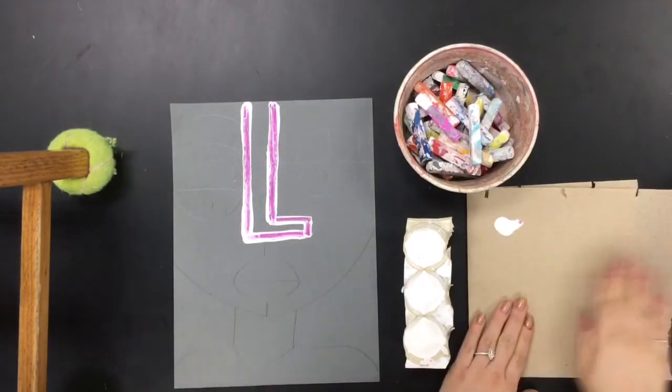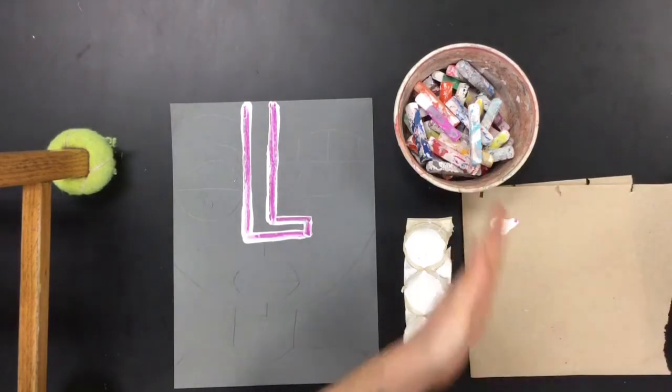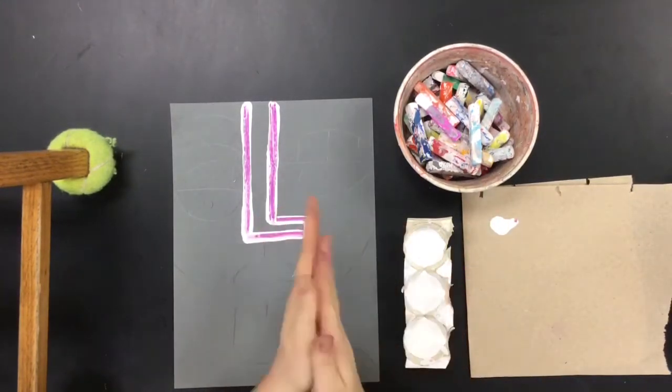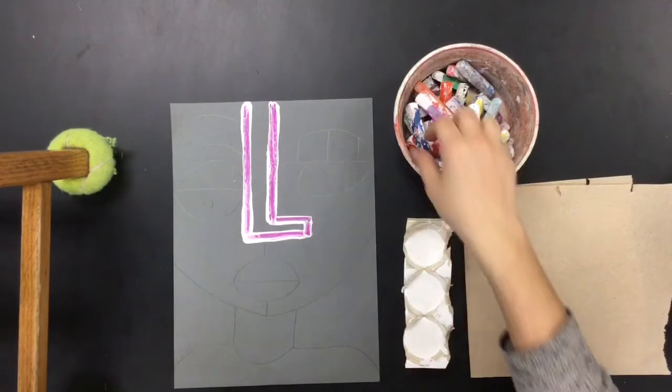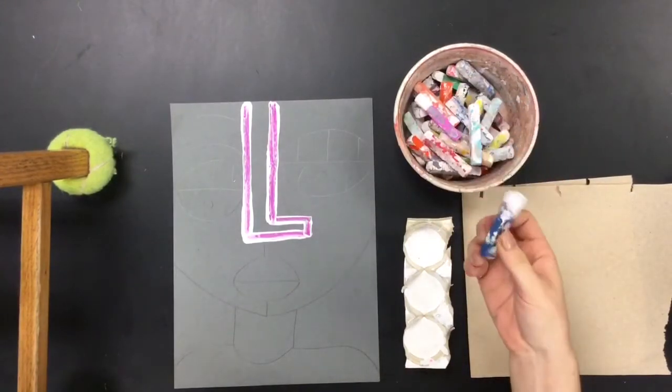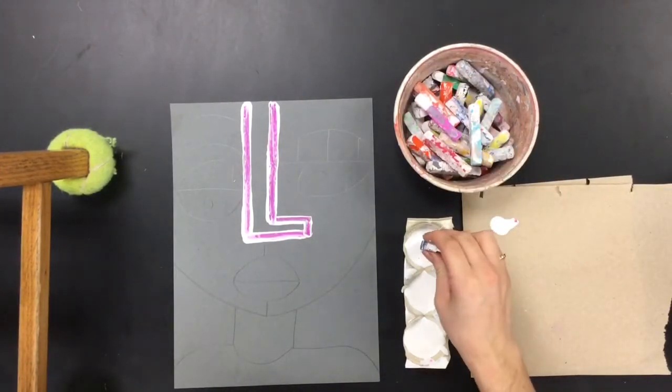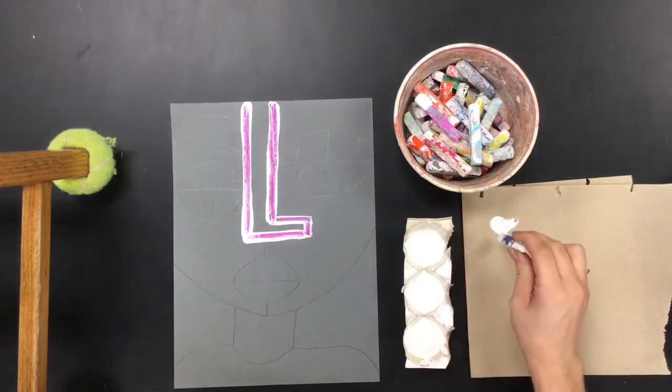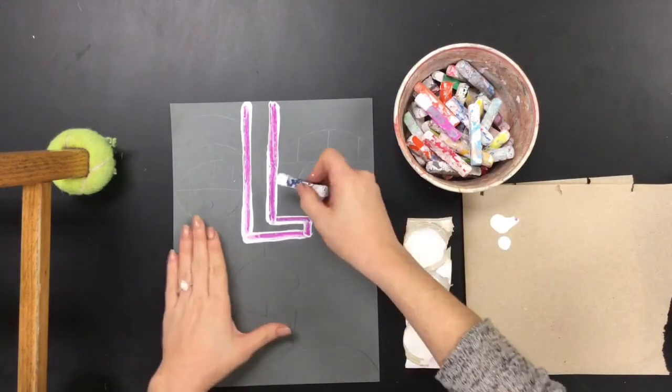Now since we are in art class and our hands sometimes do get a little bit dirty, you do have a paper towel at your table that you can use to wipe your hands off and of course we will be washing our hands at the very end of class.